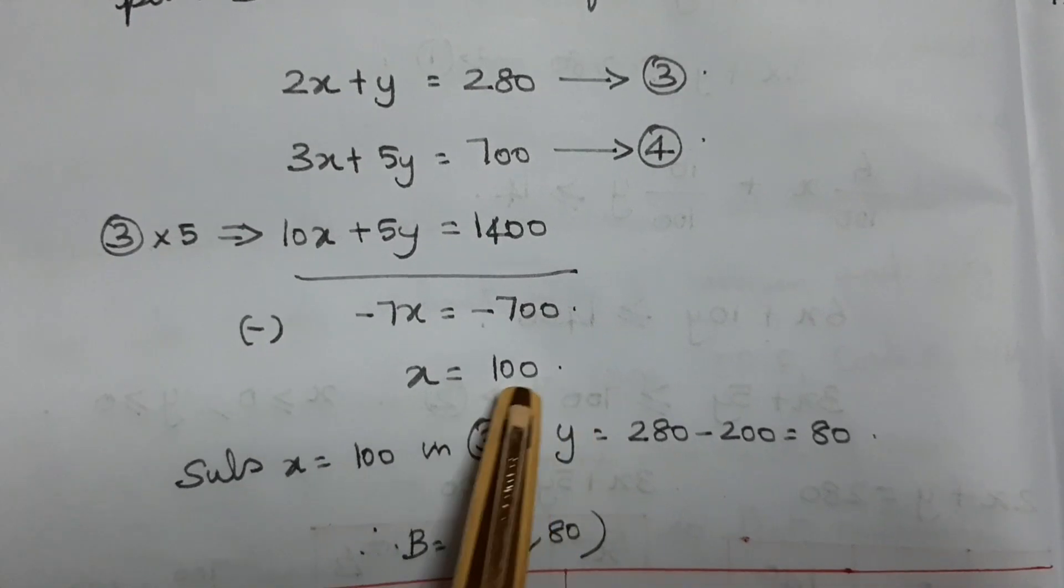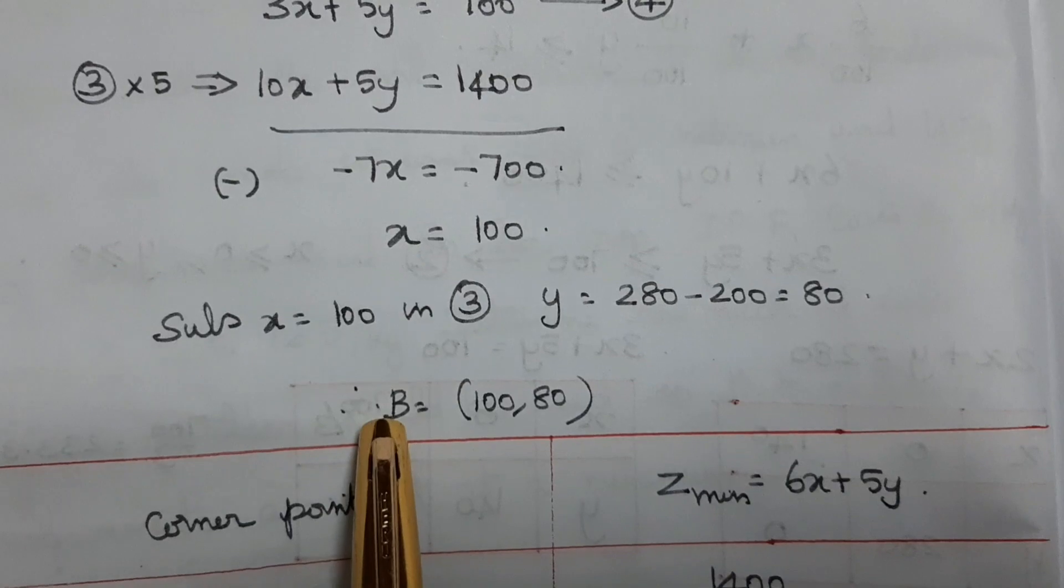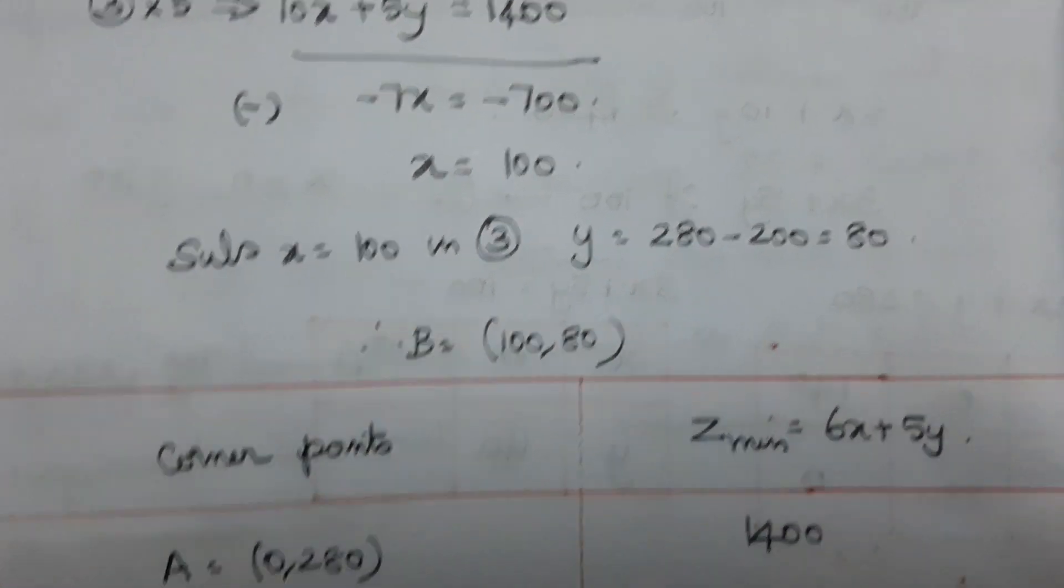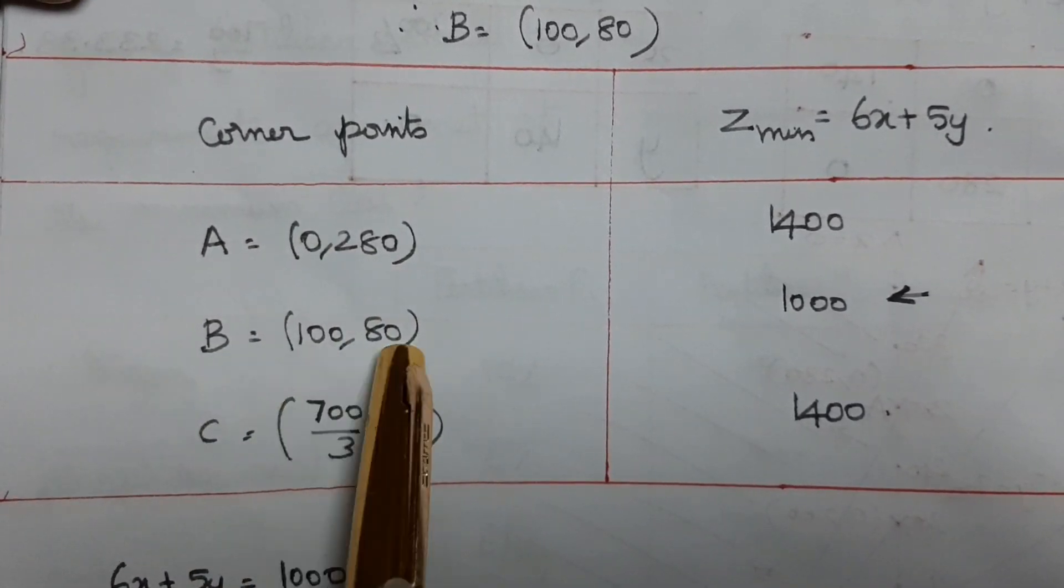x equals 100. Substituting in equation 3, y equals 280 minus 200, which is 80. Then b has the value 100, 80. The corner points are: A equals 0, 280, B equals 100, 80, C equals 700 by 3, 0.